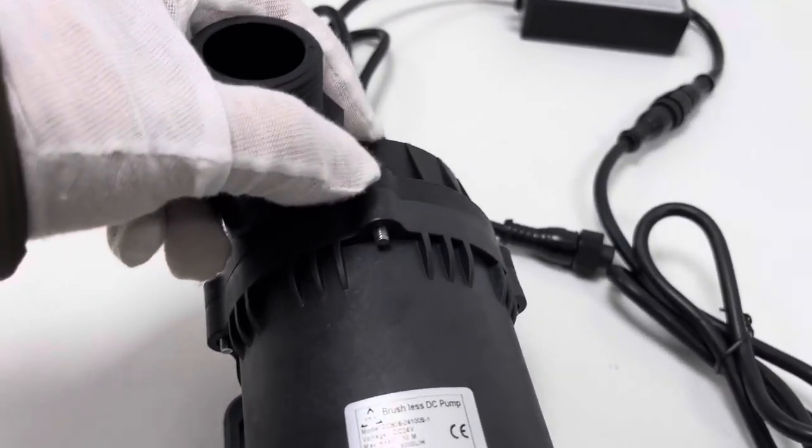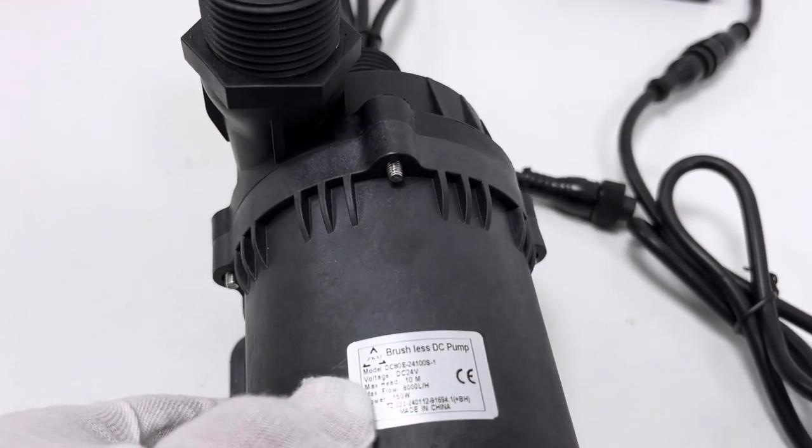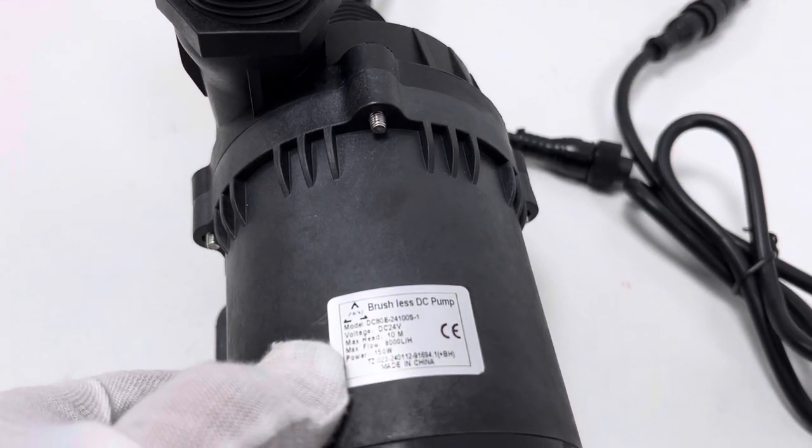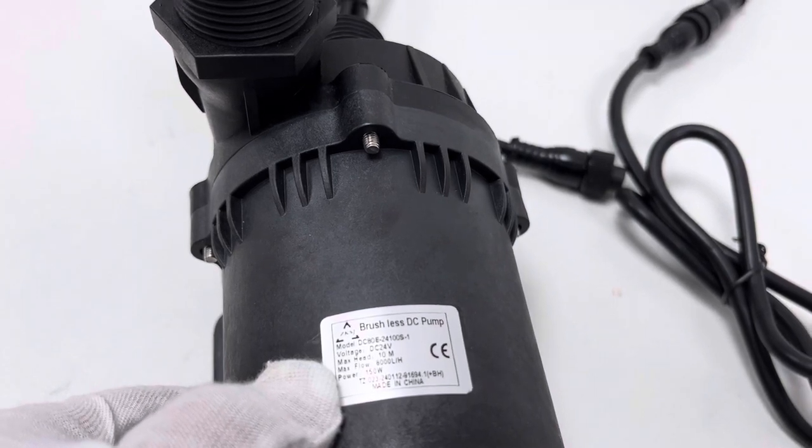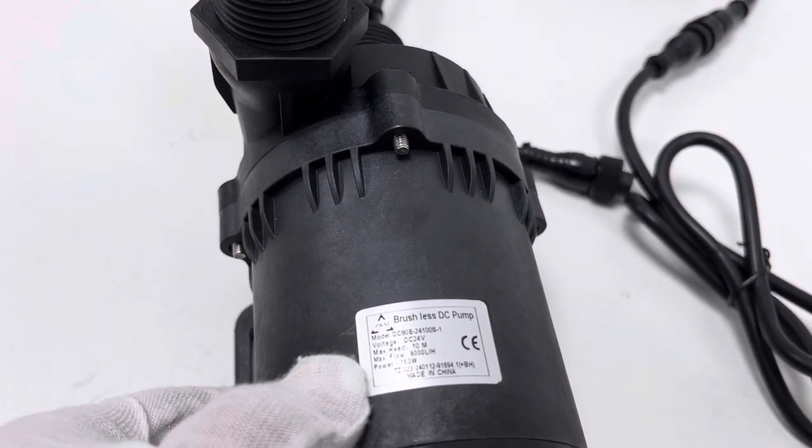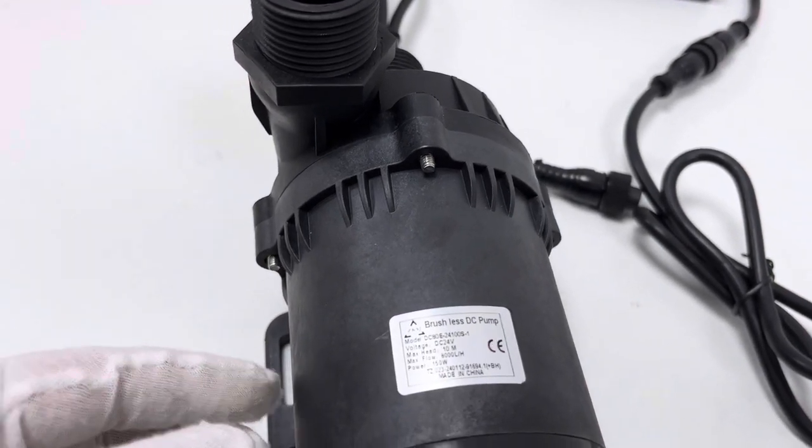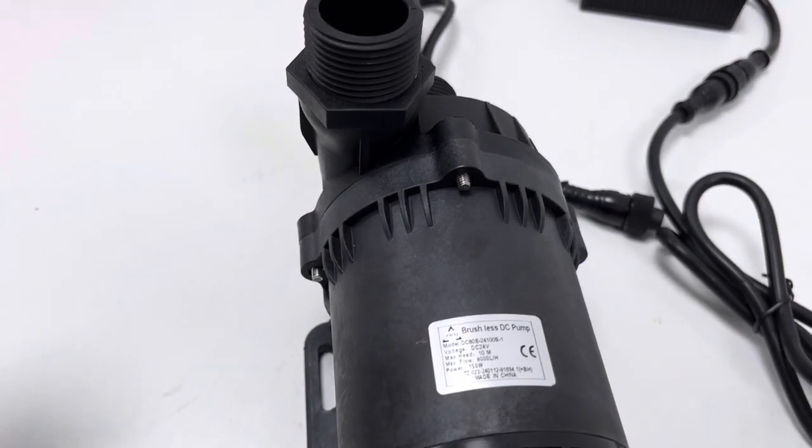Let's take a look at this pump's label to read the main parameters marking. Model DC-8E24100S1, the rated voltage 24 volts DC, the rated power consumption 150 watts, the max static lift about 10 meters, and the max horizontal flow rate up to 8000 liters per hour.